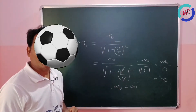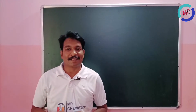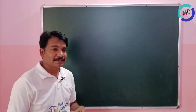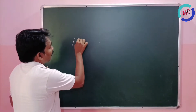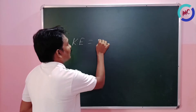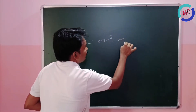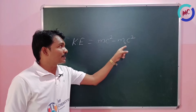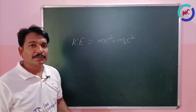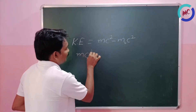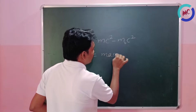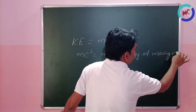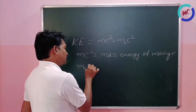The same concept is useful to calculate kinetic energy. The relation between kinetic energy and the mass of the moving electron is: KE equals mc² minus m₀c². Here, mc² is the mass energy of the moving electron, whereas m₀c² is the mass energy of the electron at rest.